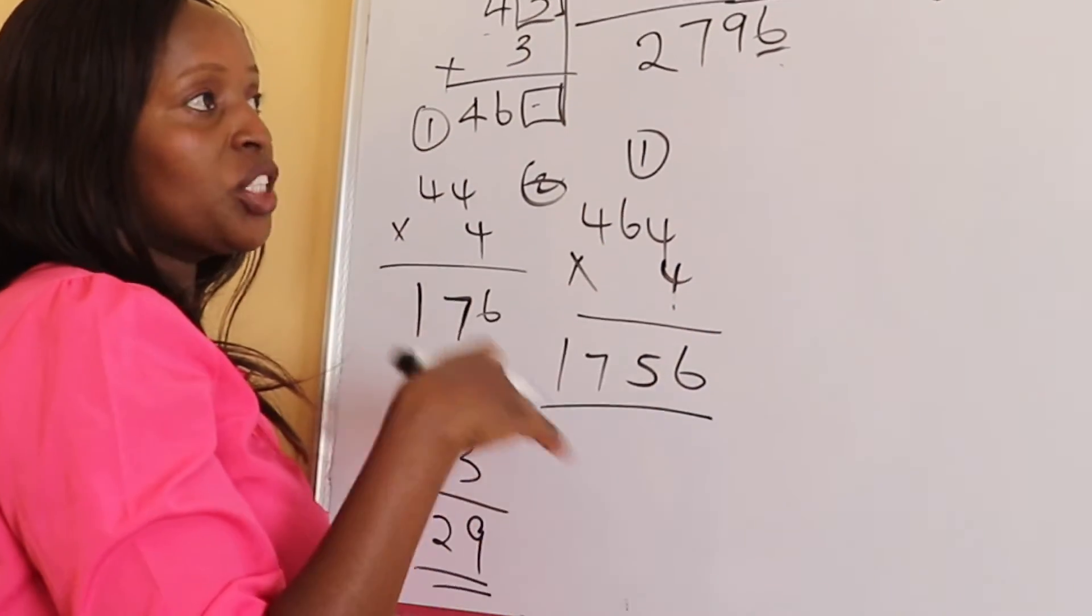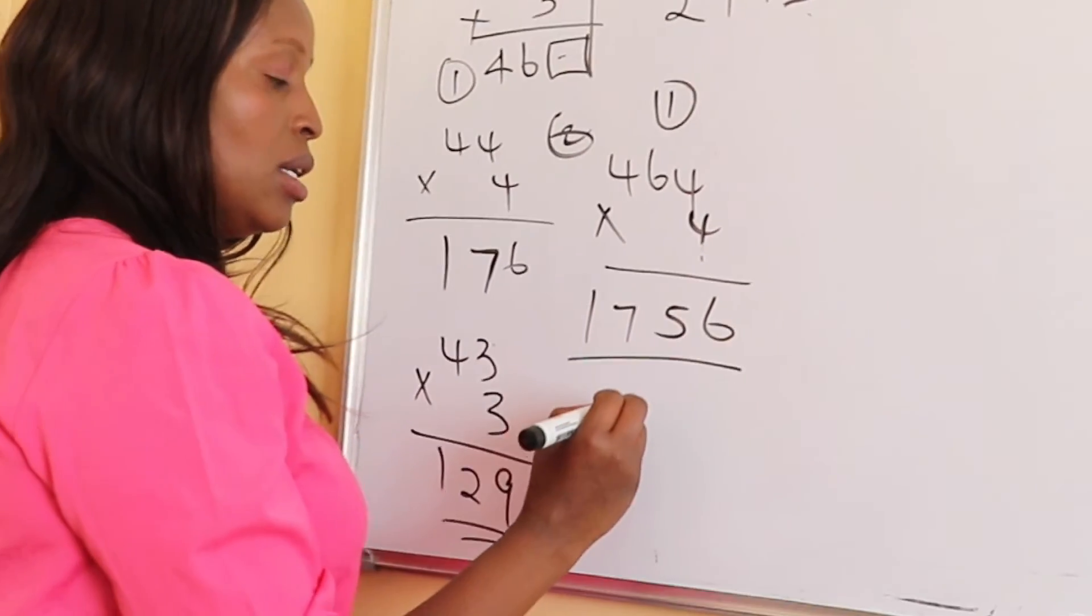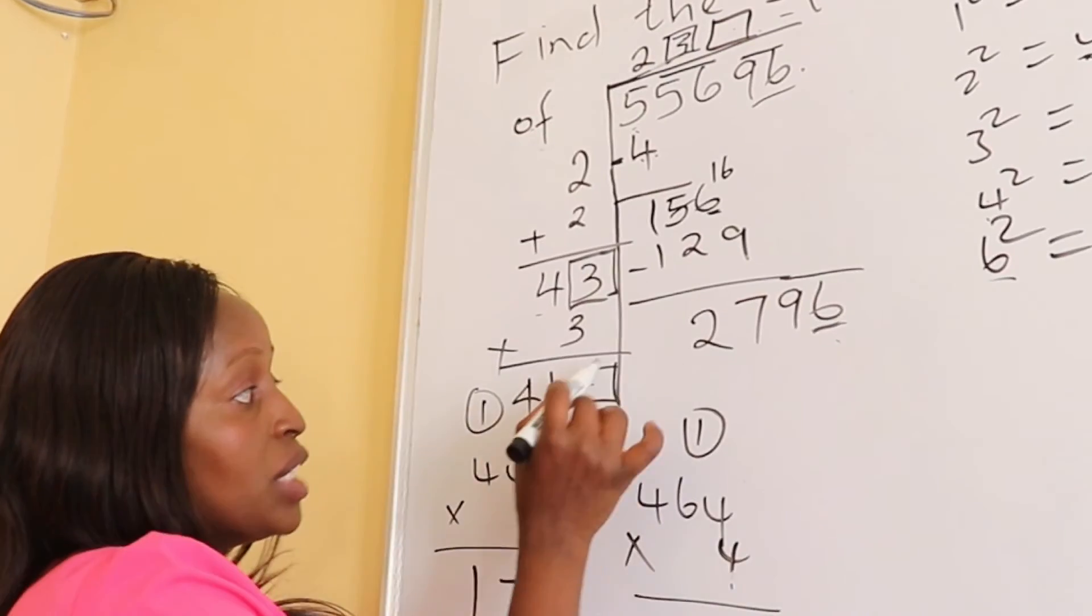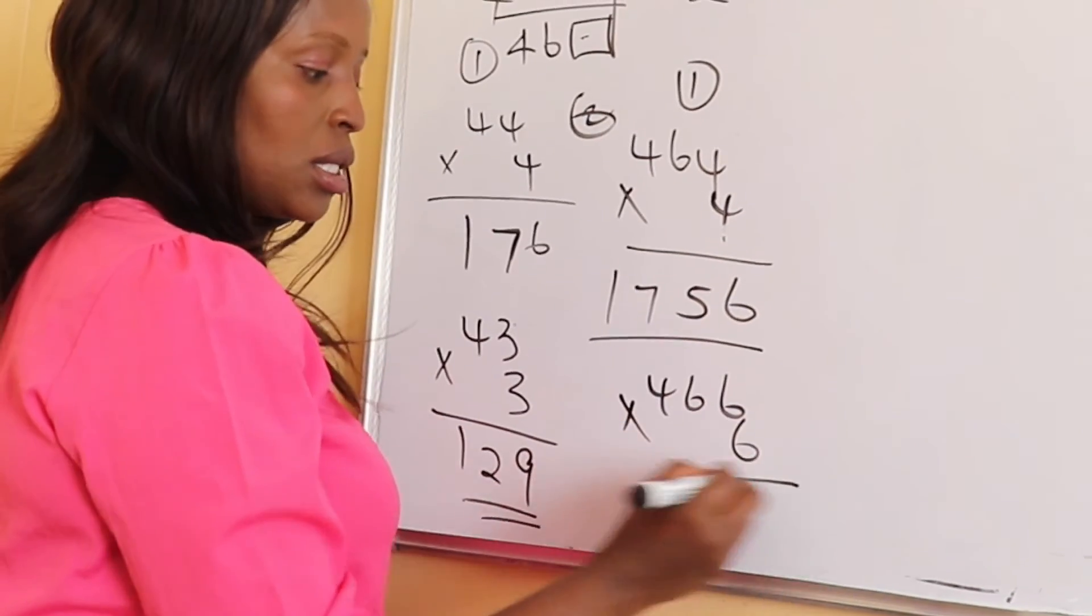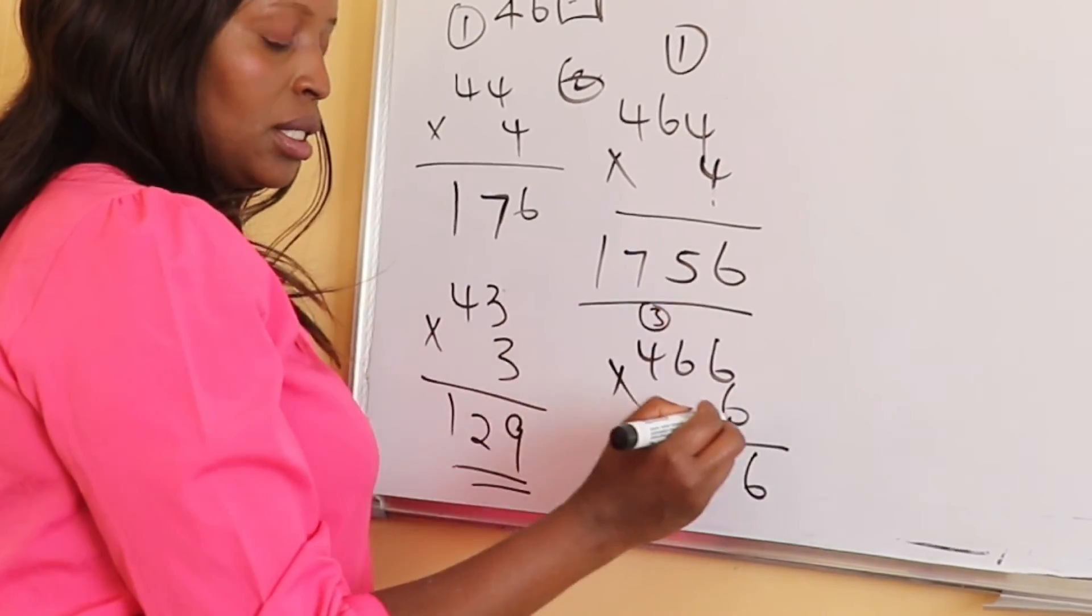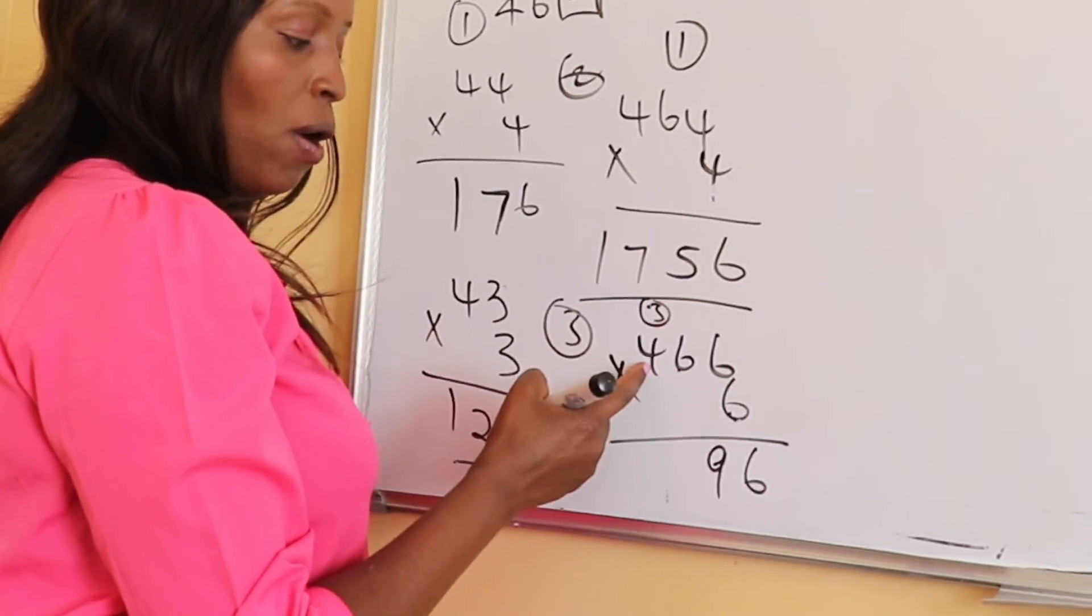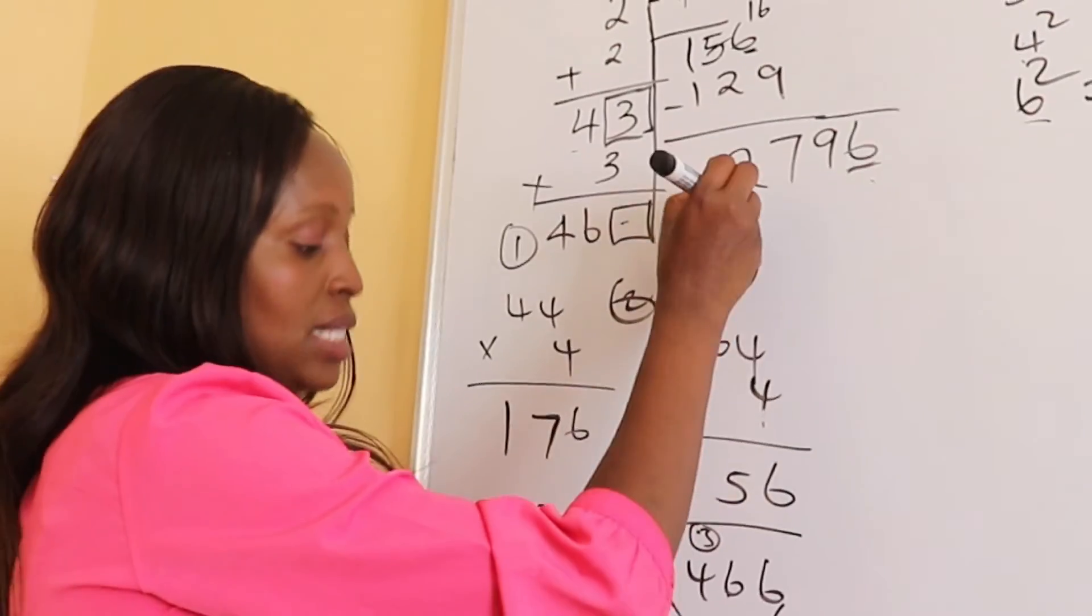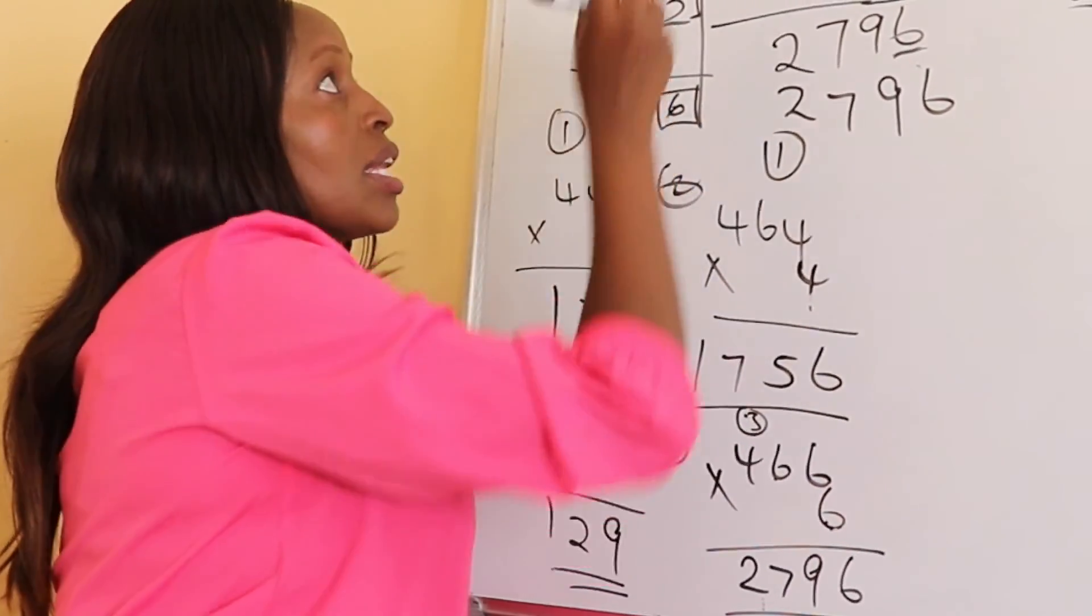We'll try the next one which is 6. Now we say 466, because now we are putting 6 also here and also there. So 466 multiply by 6: 6 times 6 is 36 carry 3, 6 times 6 plus 3 is 39 carry 3, 6 times 4 is 24 plus 3 is 27. And now you can see we got 2796 because of digit 6, so we put 6 there and 6 there.